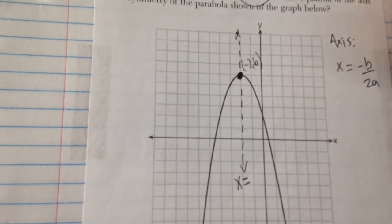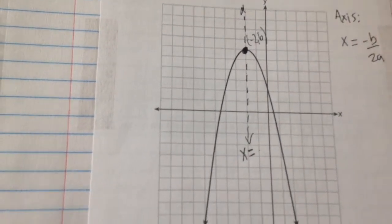Now the axis of symmetry is a vertical line that runs through that point, so the equation of that is always x equals. And a little tip for you, this number always matches that one.